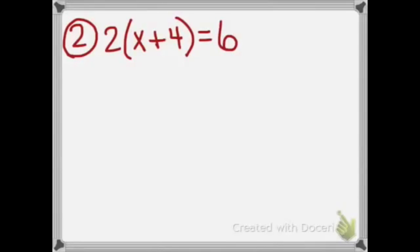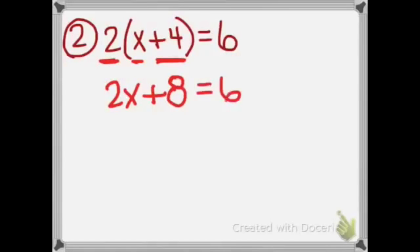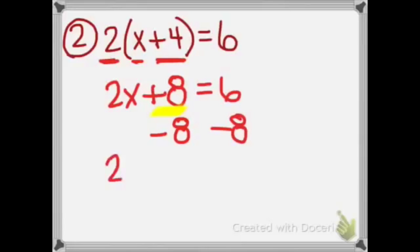Problem number 2. Let's start with the first step again: distribute with multiplication. We can definitely do that because there are parentheses. So we're going to take the 2 times x, which is 2x, and then the 2 times the positive 4, which is positive 8. We don't have any large fractions to get rid of. Step 3 says add or subtract the term without the variable, which is this positive 8. So we're going to do the opposite, which is minus 8 on both sides. 2x plus 8 minus 8 is 0, equals 6 minus 8 is negative 2.